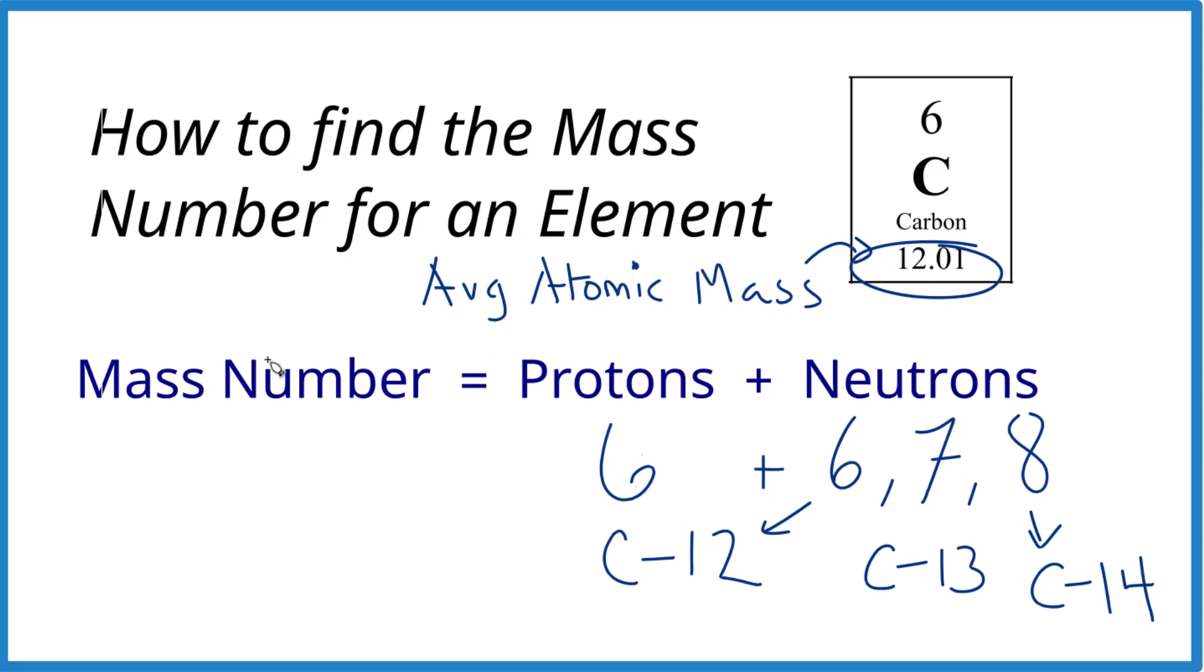And it's not a whole number like mass number. That's because we're averaging all of these different isotopes of carbon. Most of them are carbon-12 with 6 neutrons. That's why this number is closer to 12.